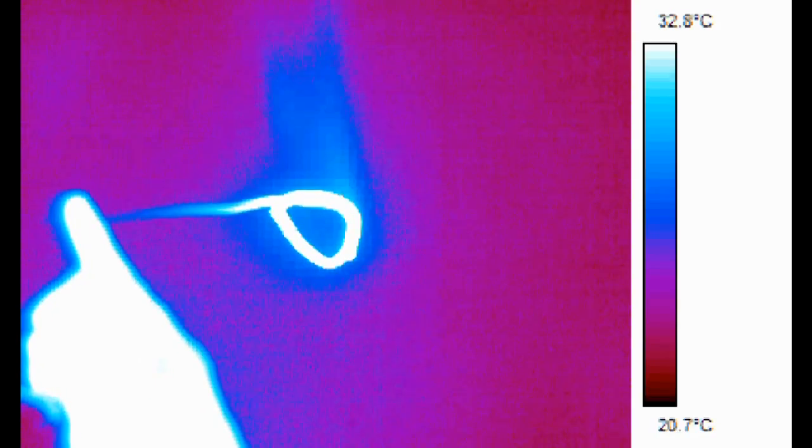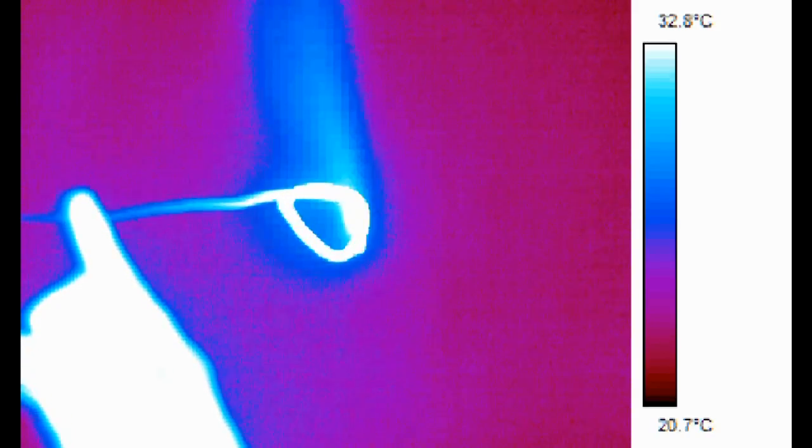If we push the wire towards the cardboard, we see that the hot air rising off the wire heats the cardboard. This hot stream of air is called a convection current and is part of natural convection.